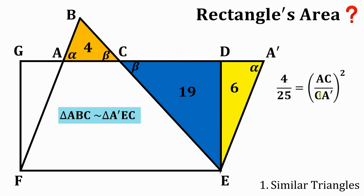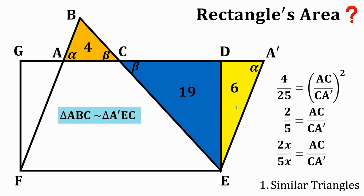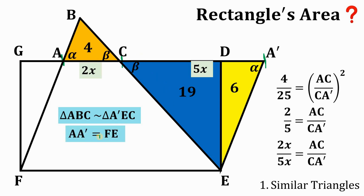Taking the square root of both sides, since AC over CA' are side lengths, we don't need the negative values. So this is just 2 over 5 equals AC over CA'. We can write AC as 2x and CA' as 5x. Note that from A to A' is just the length of side FE or GD. Therefore AA' equals FE, and FE can be rewritten as 2x plus 5x, or simply 7x.